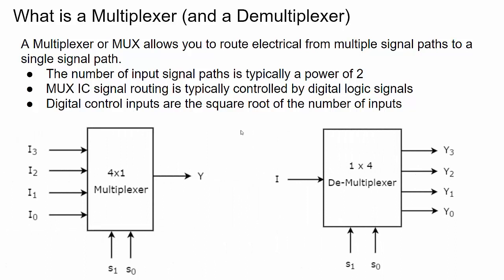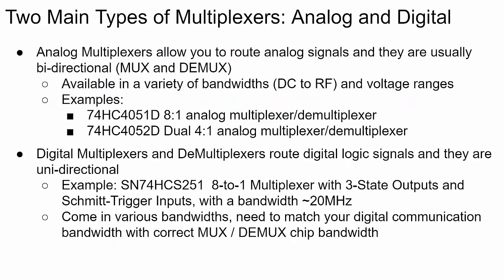Demultiplexers are basically the same thing except the signal flow is going in the other direction — you have a single input going to multiple outputs. There are two main types of multiplexers and demultiplexers. The first is analog. Analog multiplexers and demultiplexers are typically bi-directional, meaning you can route signals in either direction, so they're a multiplexer and demultiplexer in one. For the analog type, you can get them in a variety of frequency bandwidths from DC to RF — typically the higher the frequency, the more expensive.